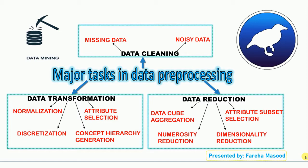The second major task in data pre-processing is data transformation, which includes normalization, attribute selection, discretization, and concept hierarchy generation. Today we are also going to discuss how to perform discretization using Weka software. Last but not least is data reduction, which includes data cube aggregation, numerosity reduction, dimensionality reduction, and attribute subset selection. These are different data reduction methods we can use.